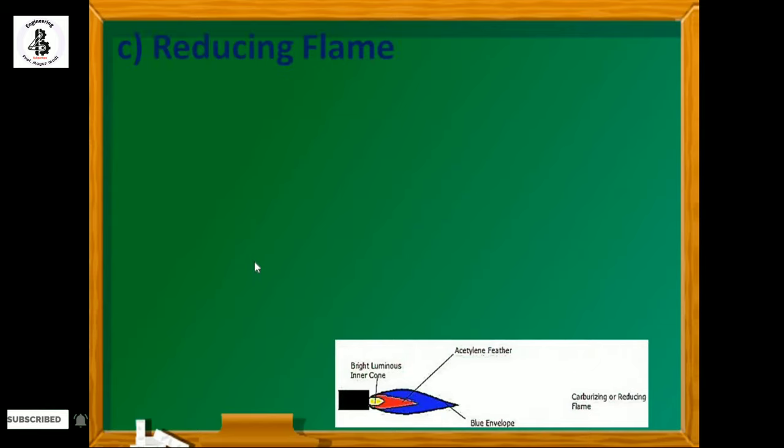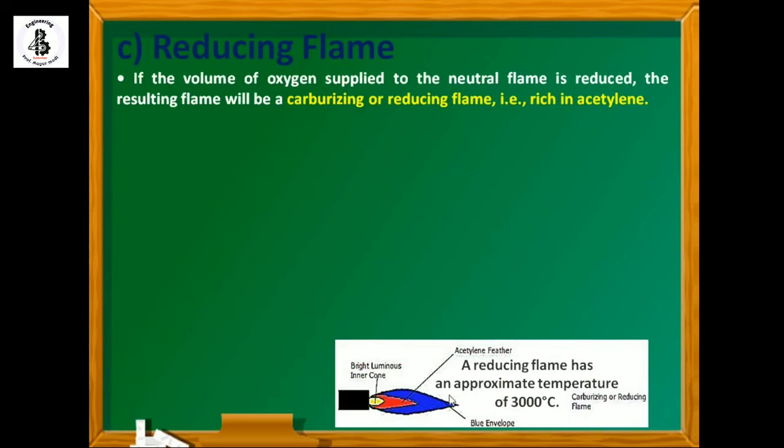After the oxidizing flame, now we will discuss reducing flame. Just you can see the orientations. It will be having three different joints: the inner cone will be the bright luminous inner cone, in between there will be the acetylene feathers, and outer it will be a blue envelope. A reducing flame has an approximate temperature around 3000 degree centigrade. You can also say it will be carburizing flame or reducing flame.